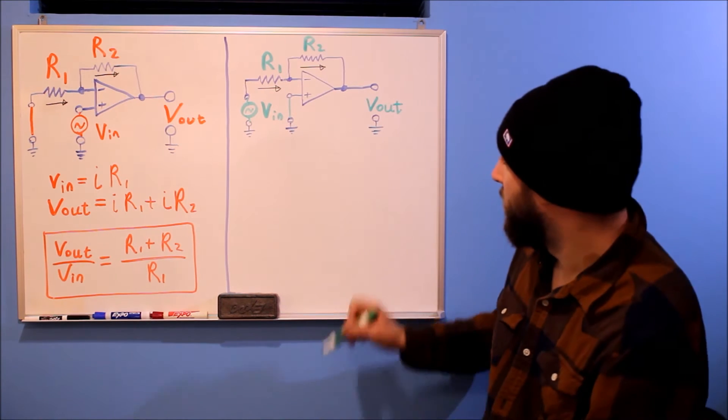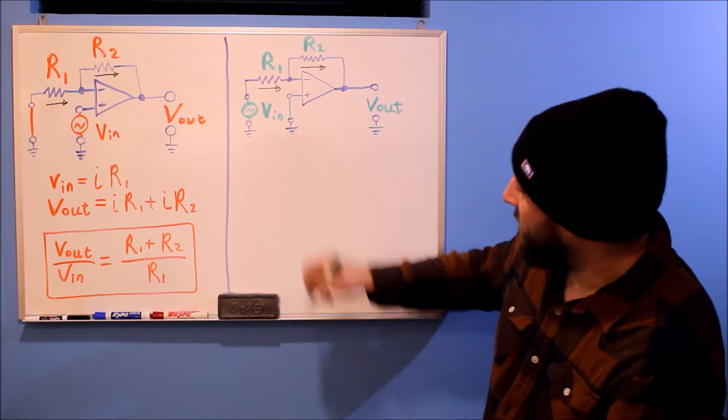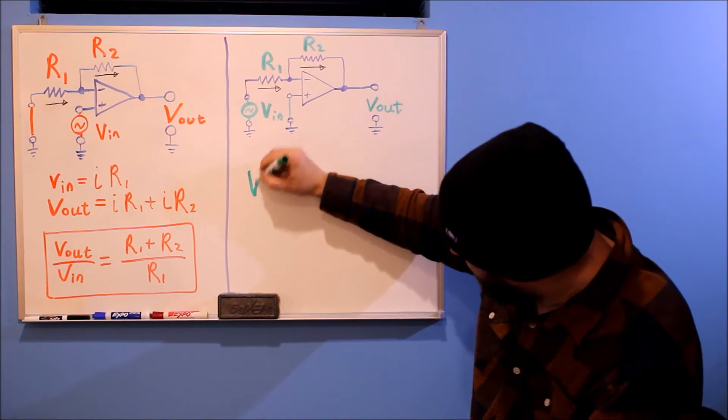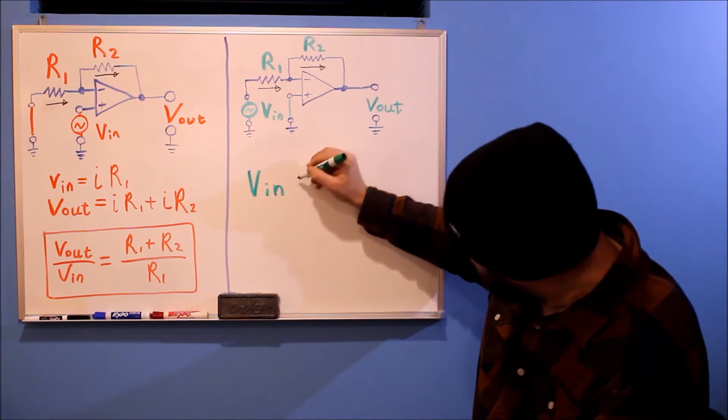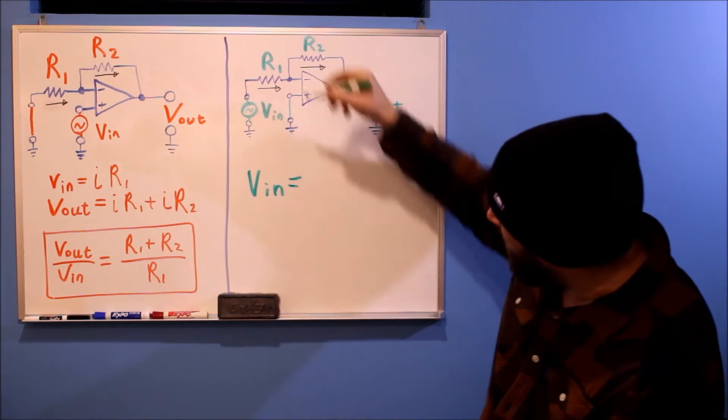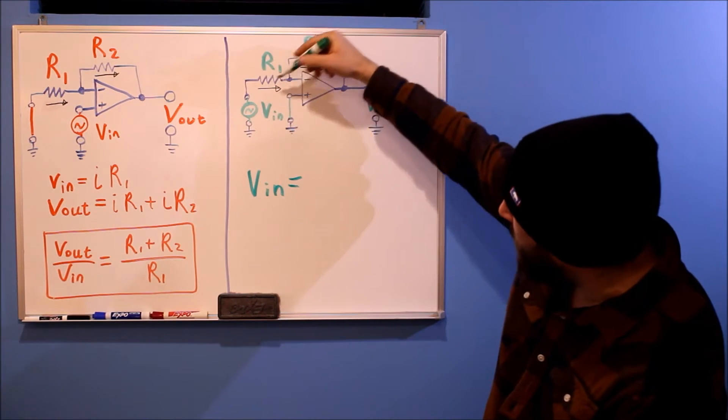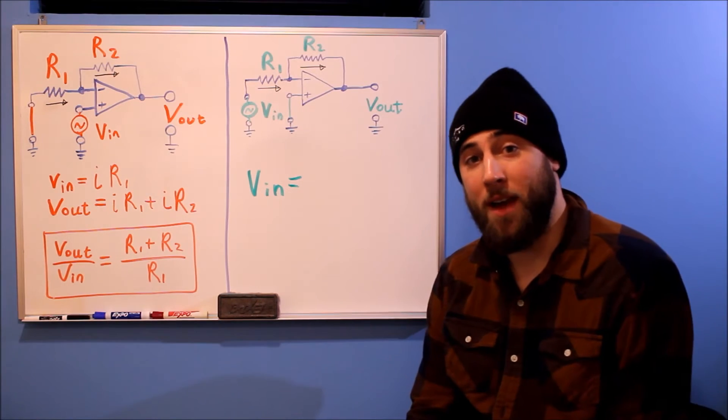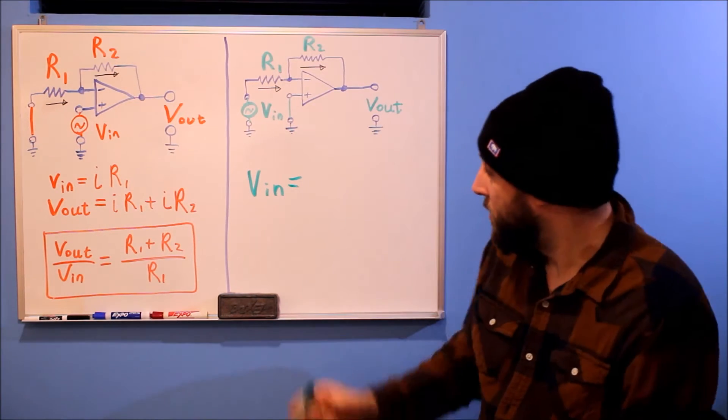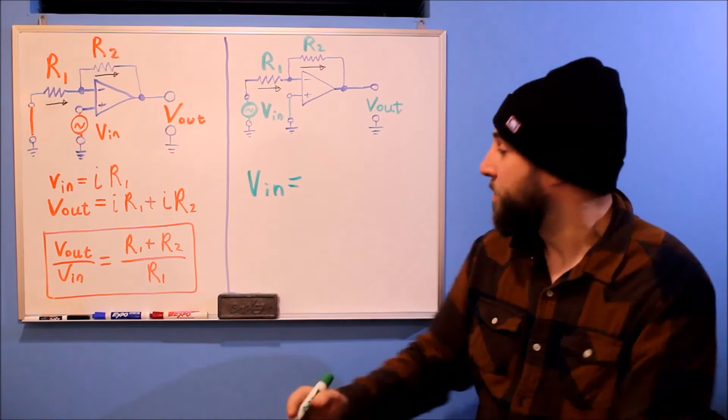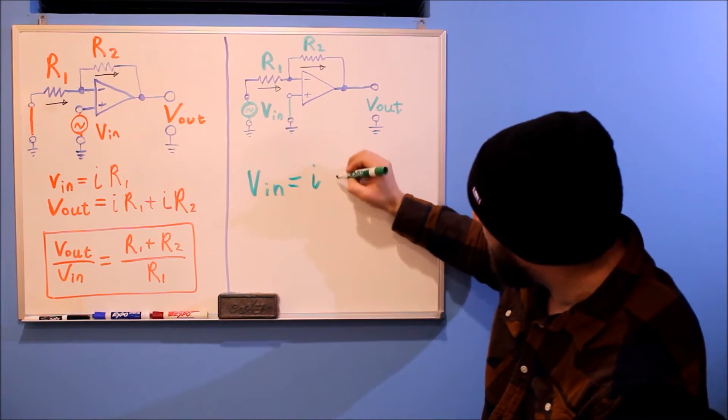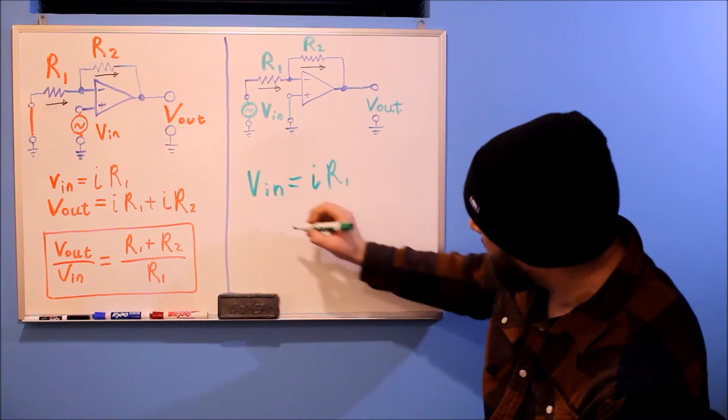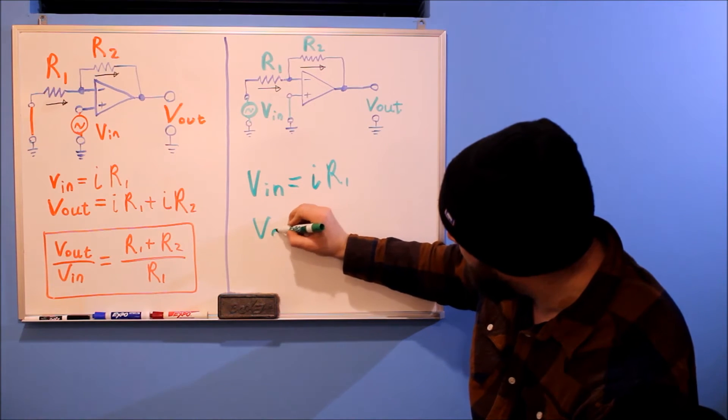So let's analyze VN. VN is equal to, now let's follow the path through R1. R1 and we're at our inverting input, and that is effectively ground. So we're already there, we're at ground. So it's just I R1.